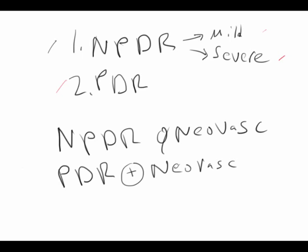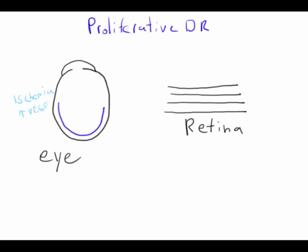This leads to the formation of fragile blood vessels. In this diagram, ischemia of the peripheral retina leads to increased VEGF, which leads to the creation of new fragile blood vessels along the surface or inner surface of the retina. The formation of new blood vessels occurs on the surface of the retina, but it can also extend to the iris and cause neovascularization there. Neovascularization of the iris can lead to clogging of the angle and increased intraocular pressure because fluid can't drain through the trabecular meshwork. This is what we call neovascular glaucoma.